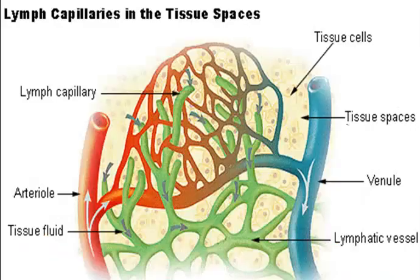Here's another image of a capillary bed which shows how extensive the lymphatic system is, which explains why it so effectively returns any tissue fluid that wasn't returned at the venous end.